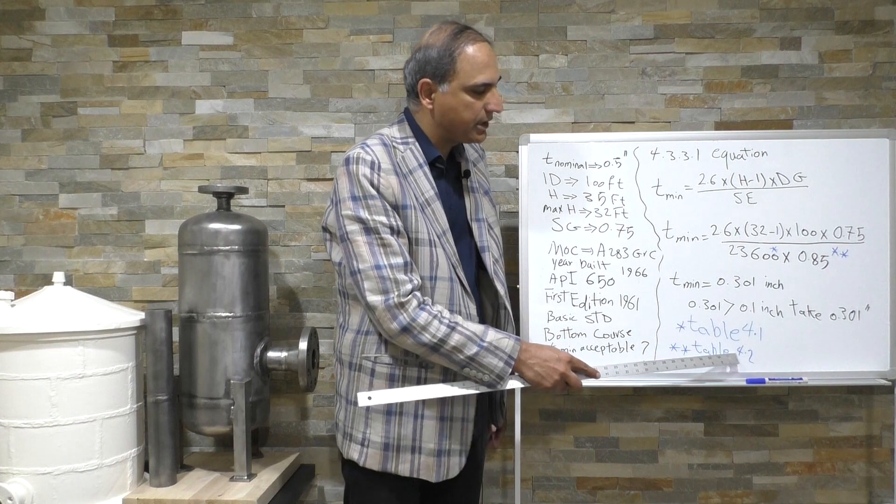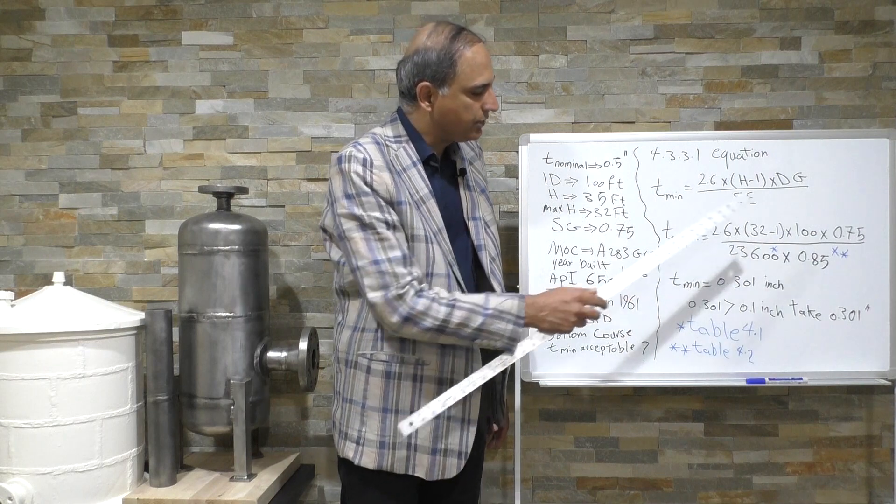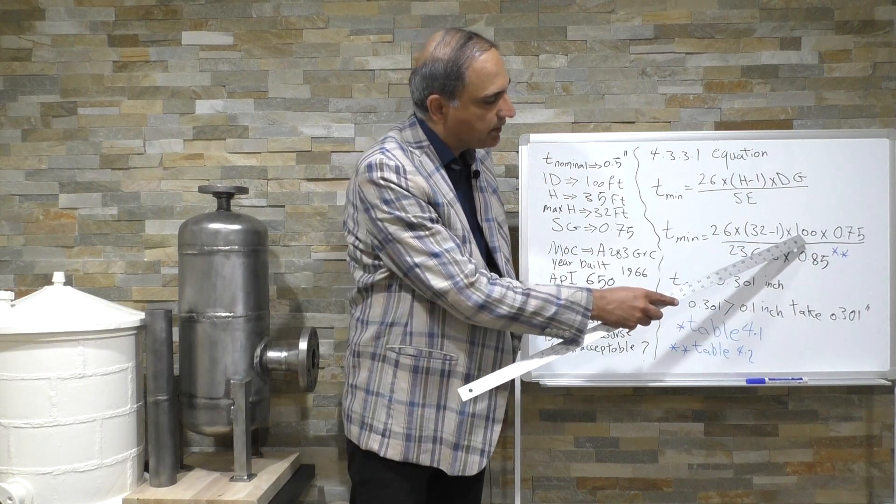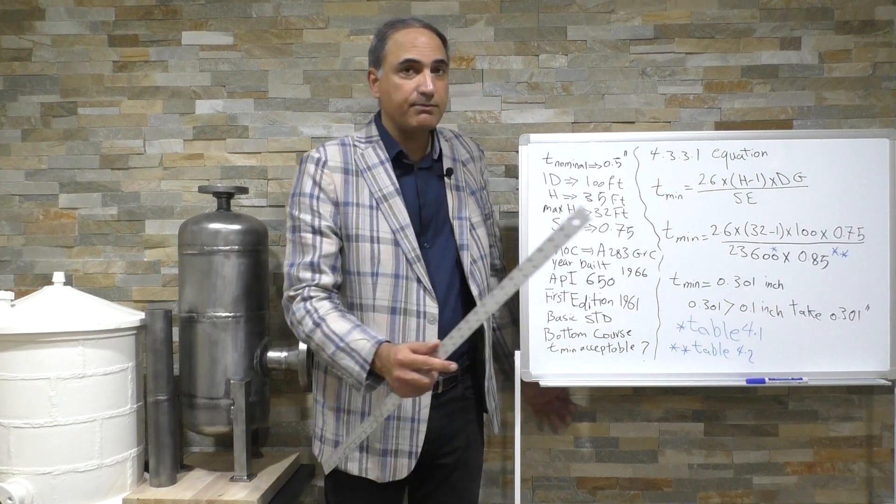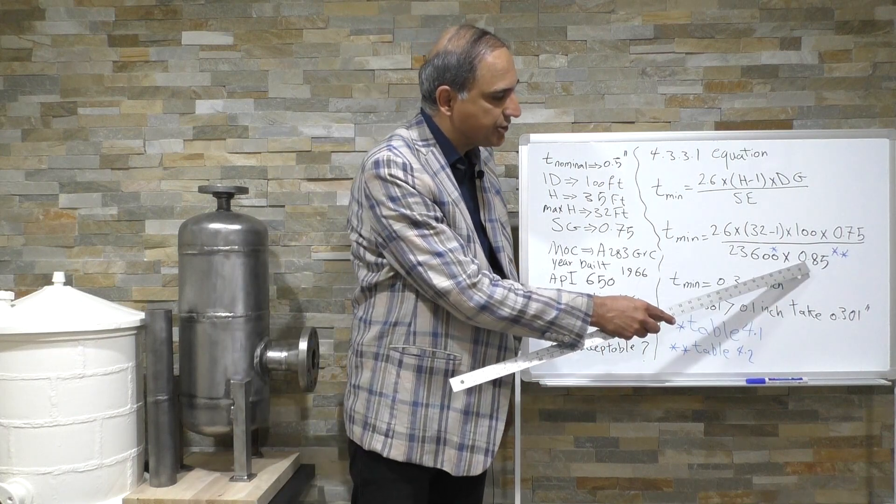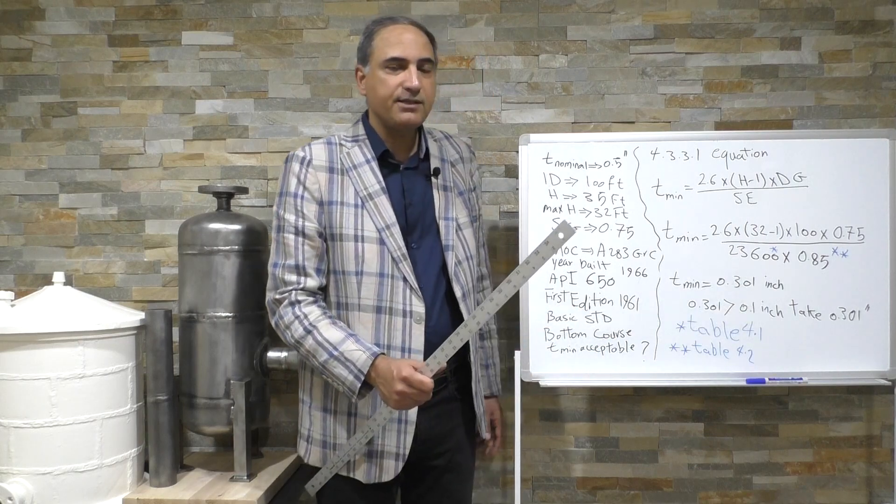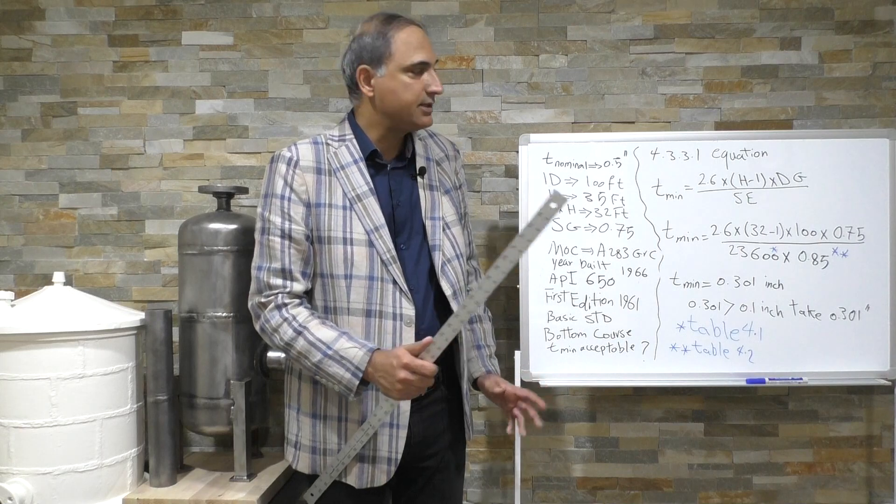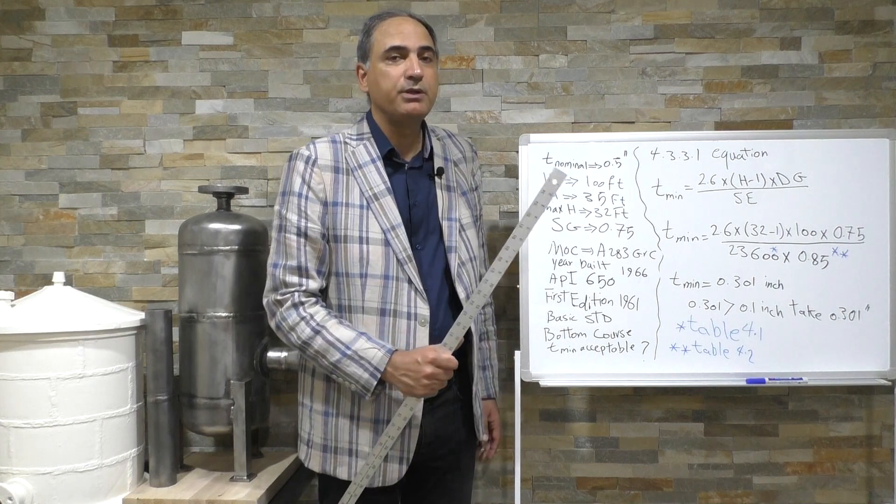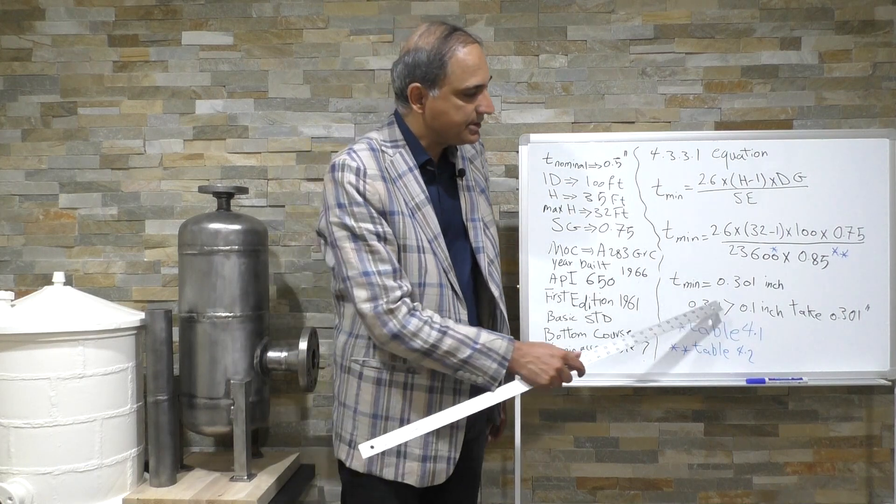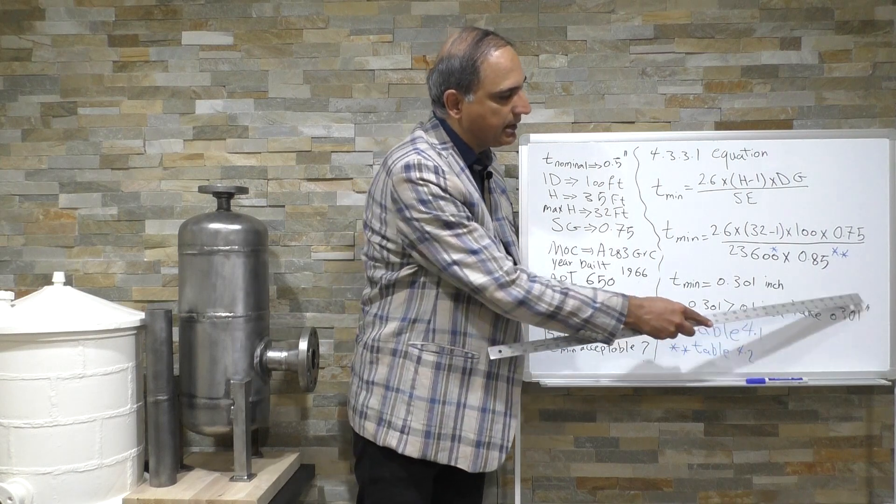Then we plug in the numbers: 2.6, 32 is the maximum liquid level, then 100 inside diameter, 0.75 specific gravity, 23,600 is our maximum allowable stress, and then this is joint efficiency, and T minimum comes as 0.301 inches. And there's a sentence in this equation that says in no cases should what we calculate be less than 0.1 inch, and since this is more than 0.1 inch we're going to take this one.